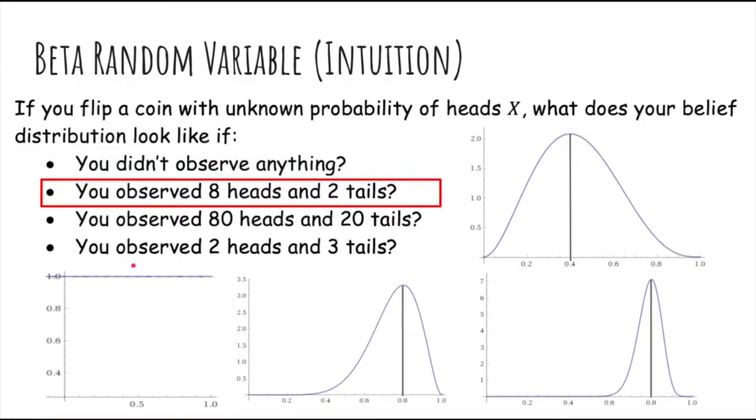What if you observed 8 heads and 2 tails? Well, in that case, you'd expect that the probability is around 80% of heads, but you have a lot of uncertainty because you've only seen 10 flips. It could just be that the coin is actually fair, and you just happen to have a coincidence where you had more heads than tails. So it could be like this graph over here.